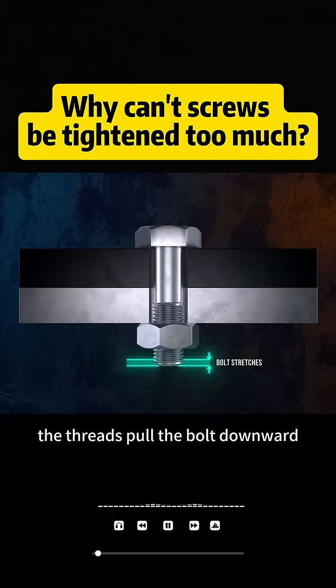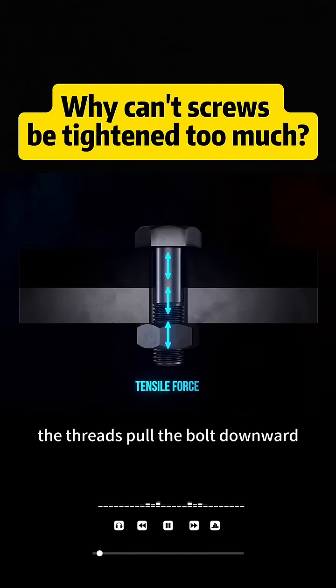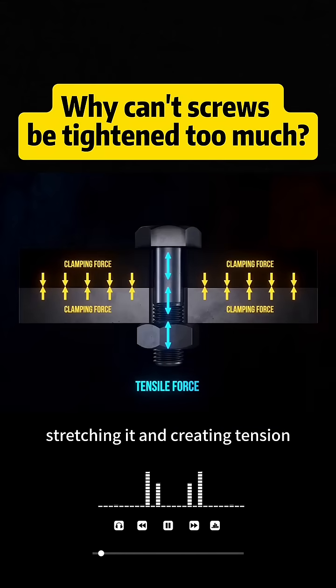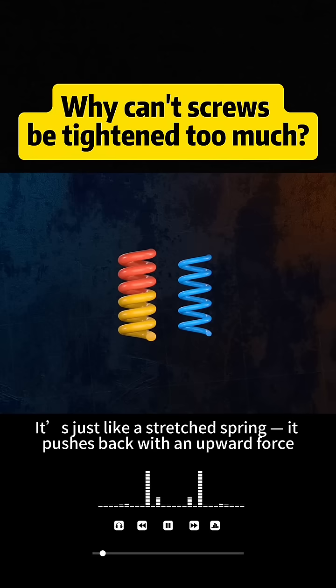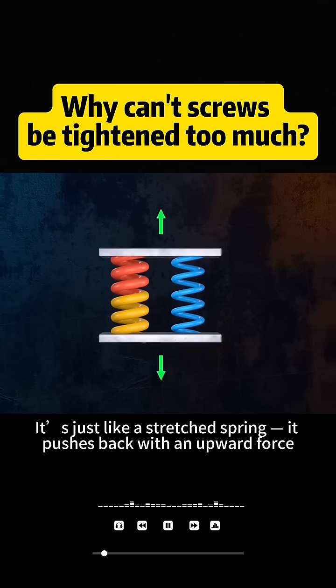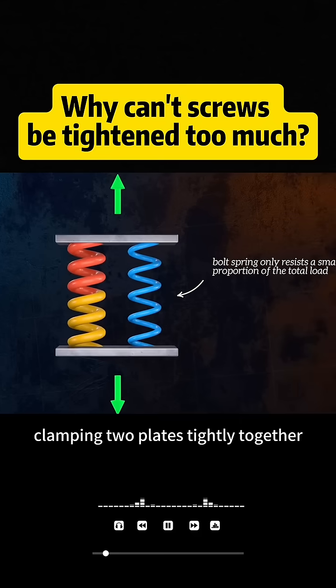When you tighten a nut, the threads pull the bolt downward, stretching it and creating tension. It's just like a stretched spring. It pushes back with an upward force, clamping two plates tightly together.